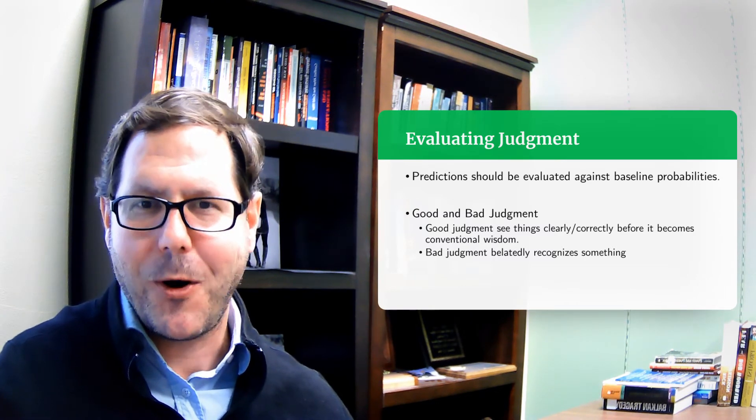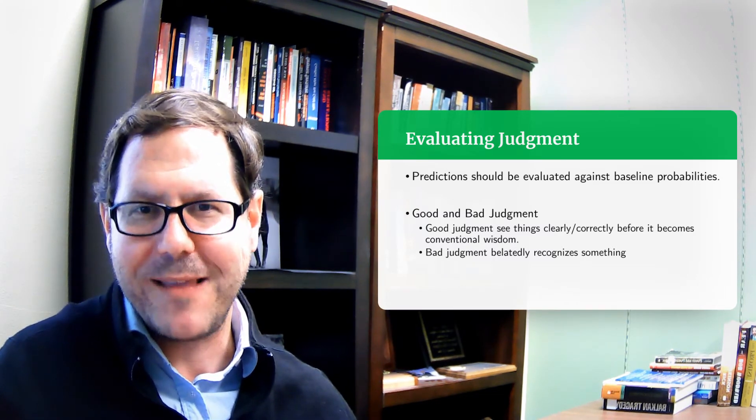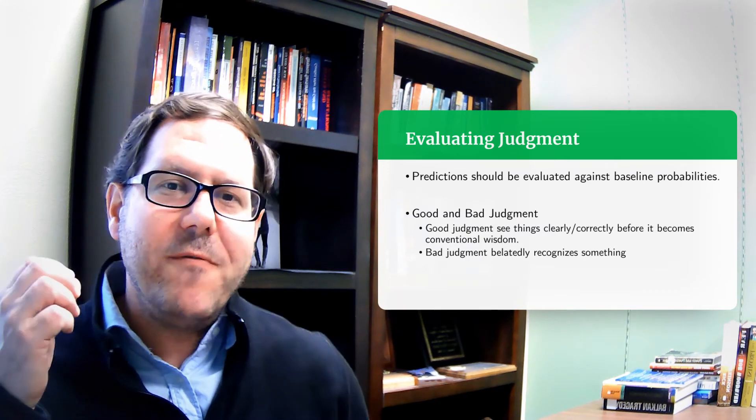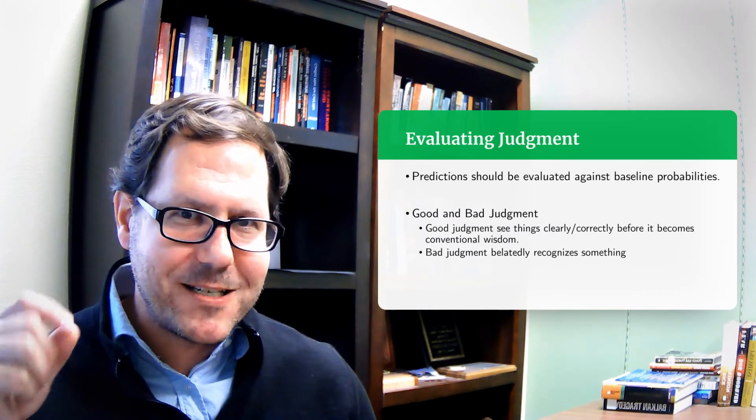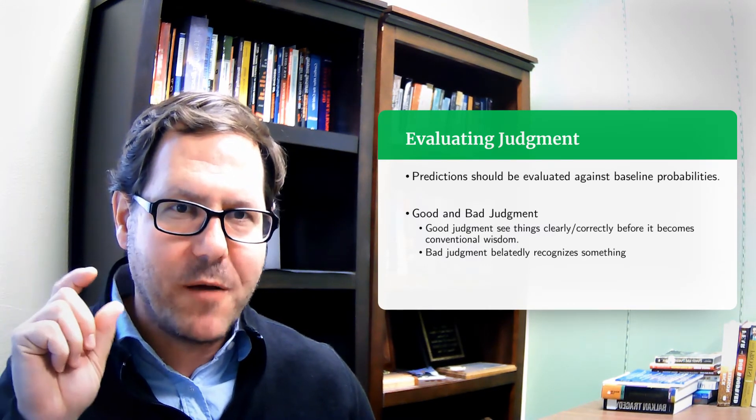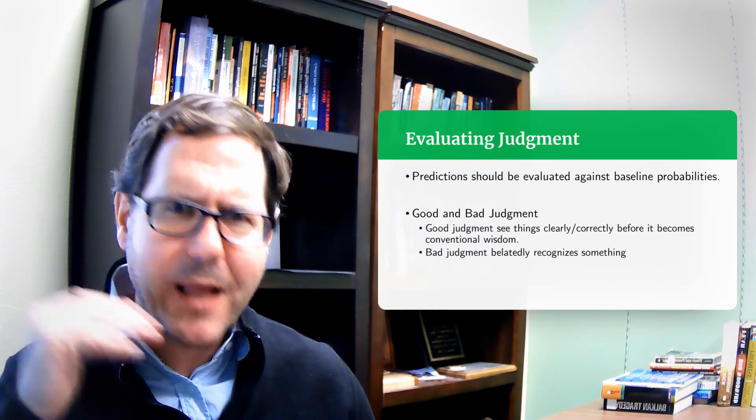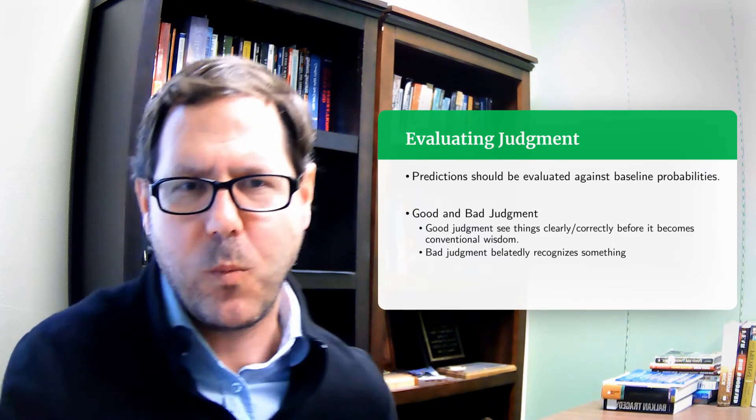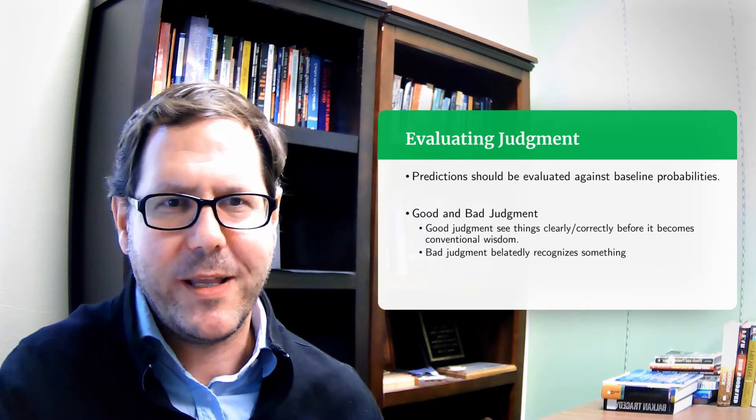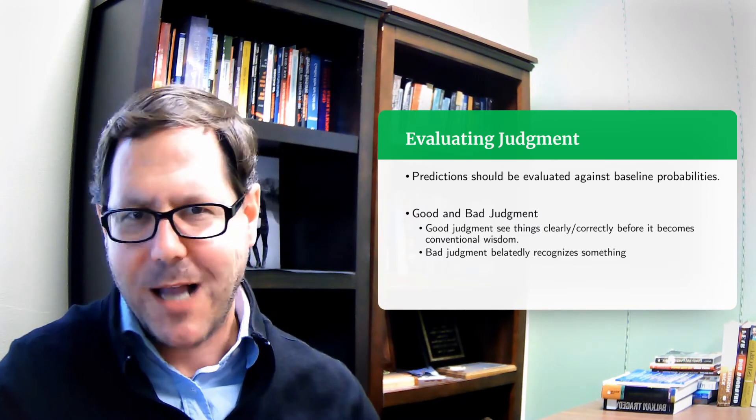The sun is going to rise in the east tomorrow and I don't get any credit for making that particular forecast. So the value of our forecast, the quality of forecast has to be interpreted in terms of the likelihood of an event happening just naturally. Is it a rare event, is it a common event?